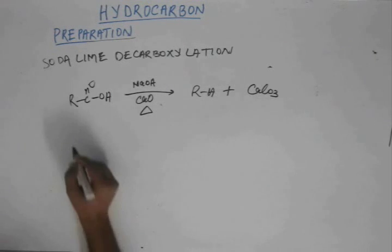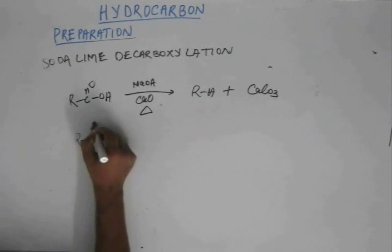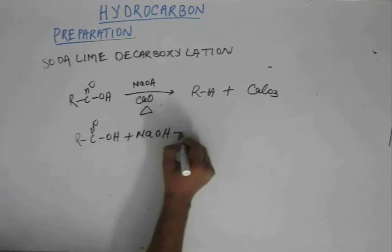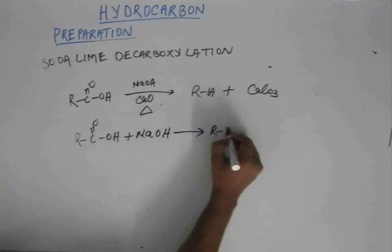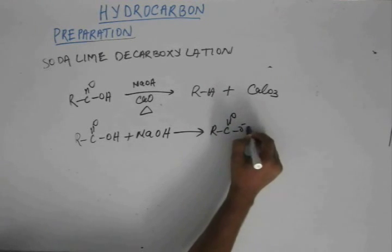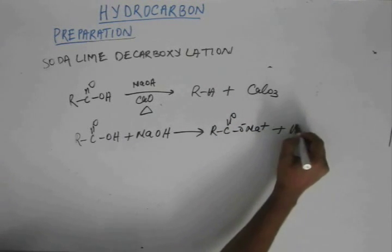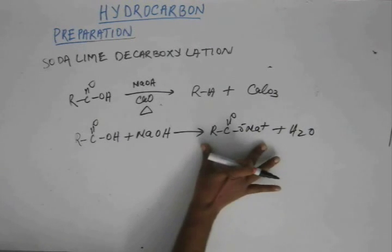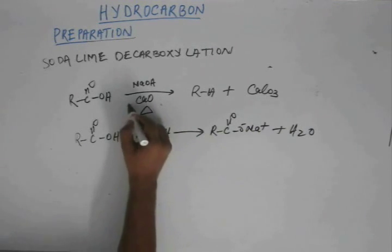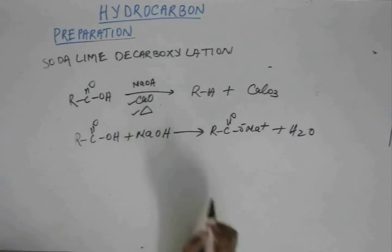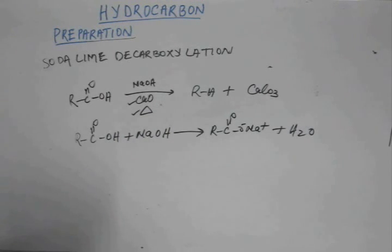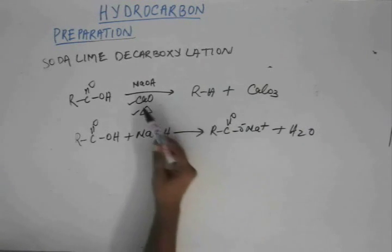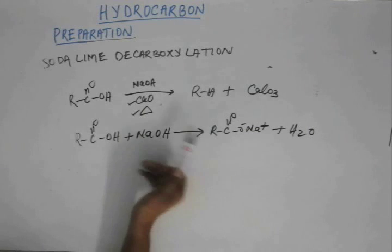The first step of the reaction could be nothing but a simple acid-base reaction. We have our carboxylic acid and a strong base; an acid-base reaction will occur and a salt — sodium carboxylate — will be formed, with water removed. Now we have sodium carboxylate, calcium oxide, and heat. Calcium oxide and sodium carboxylate are both salts, so no direct reaction can take place between these two.